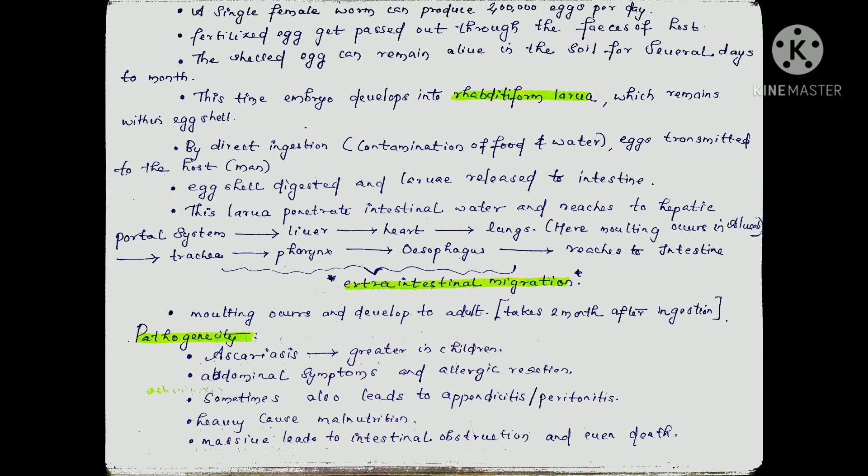By direct ingestion via contamination of food and water, eggs are transmitted to the host — that is, the man. The egg shell is digested and larvae are released into the intestine. The larvae penetrate the intestine wall and reach the hepatic portal system, then to the liver, then to the heart, then to the lungs. Here, molting occurs in the alveoli of the lungs. Then the larva reaches the trachea, then the pharynx, then the esophagus, and then back to the intestine. This migration is known as extra-intestinal migration.